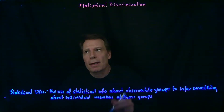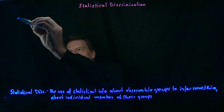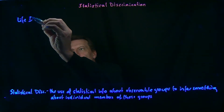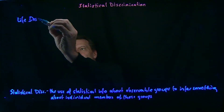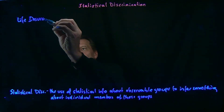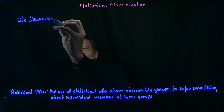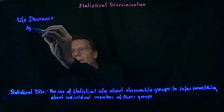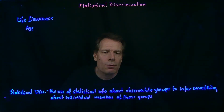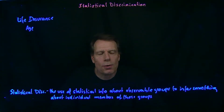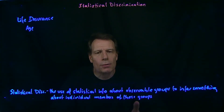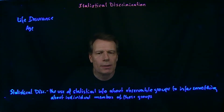Or think about life insurance markets. Life insurance companies also use age to statistically discriminate, for obvious reasons. The older we are, the more likely we are to die sooner. That's not true for everyone.